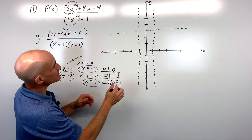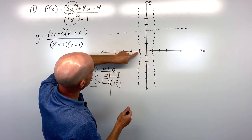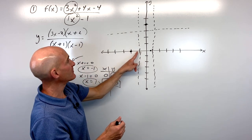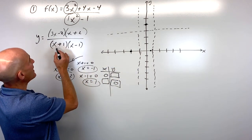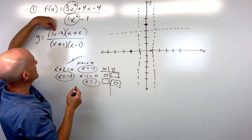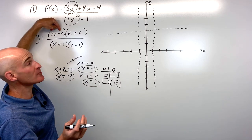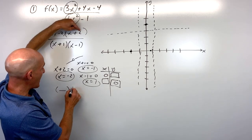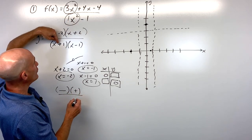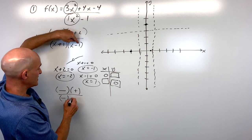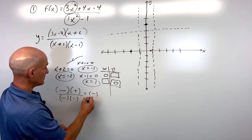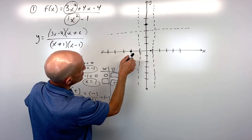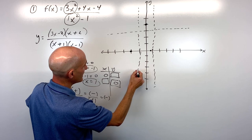Approaching x=-1 from the left, plug in -1.1. For the factor (3x-2): negative. For (x+2): positive. For (x+1): negative. For (x-1): negative. Numerator: negative × positive = negative. Denominator: negative × negative = positive. Negative divided by positive is negative — so the graph goes down toward negative infinity from the left side of x=-1.